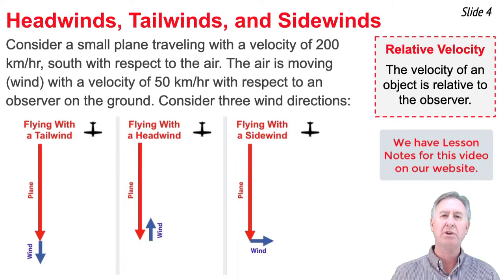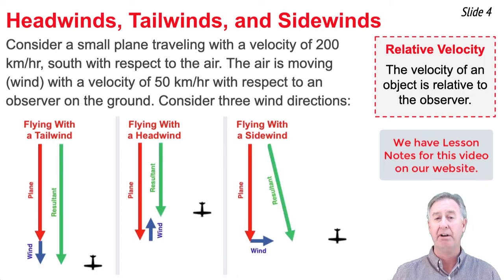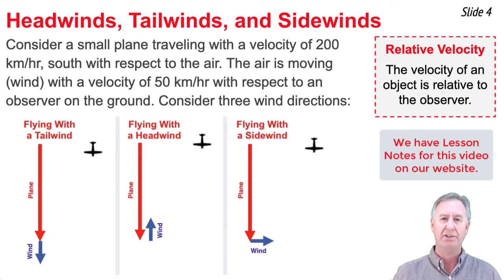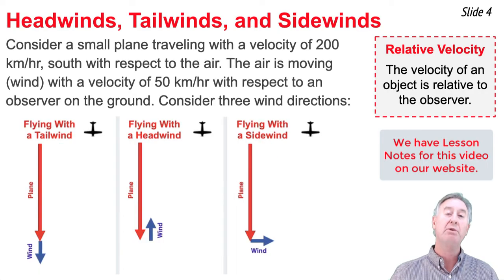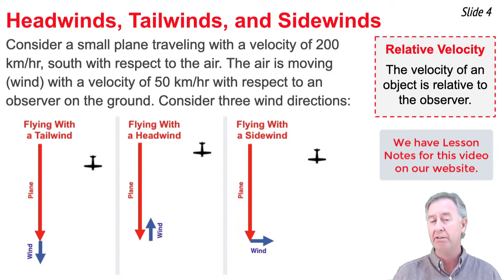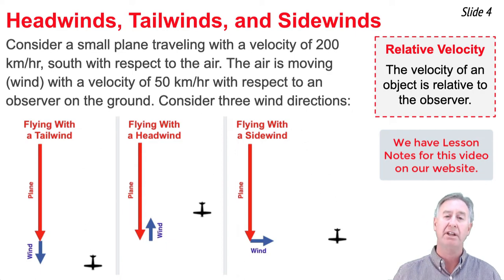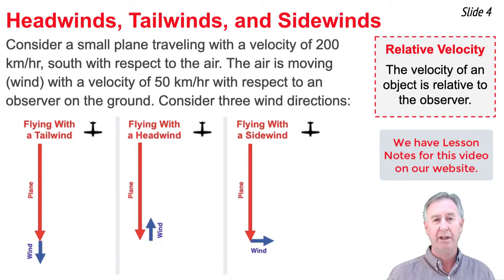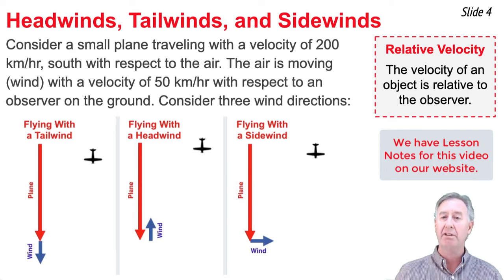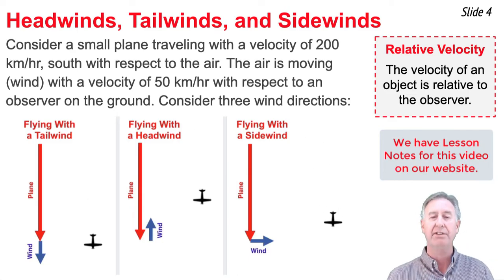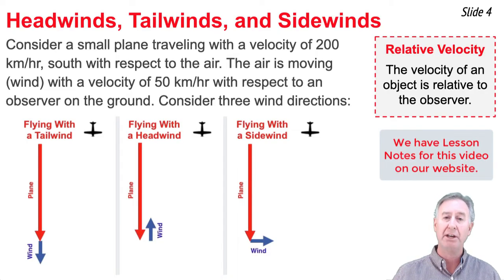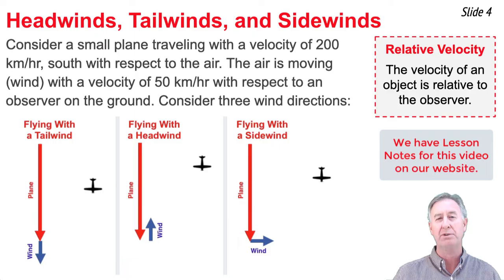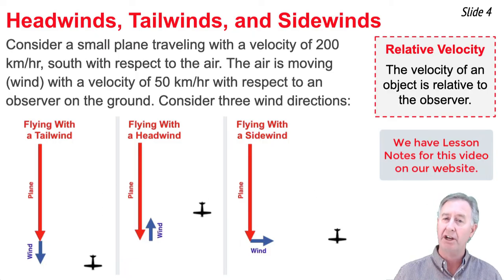Let's consider a small plane that moves with a velocity of 200 kilometers per hour south with respect to the air, and the air is moving with respect to the ground at 50 kilometers per hour in any number of directions. In the situation on the far left, we see what's called a tailwind — the wind is blowing the plane forward — and the result is that an observer on the ground would observe a relative velocity of 250 kilometers per hour. In the middle, there is a headwind; the plane is flying against the wind, and the velocity as observed from the ground is 150 kilometers per hour. In the case on the far right, the plane is flying with a side wind.